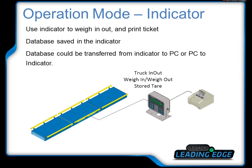Next, we're talking about the indicator-based application. The first type, shown in this picture, is the simplest: one scale with one indicator. The operator uses the indicator to weigh in and weigh out. The database is saved in the indicator and can be transferred between the indicator and PC.